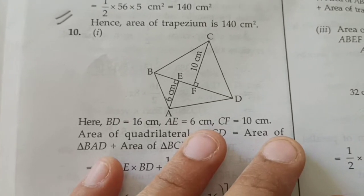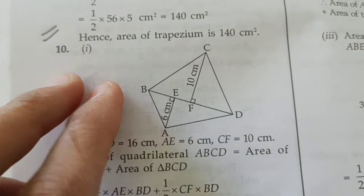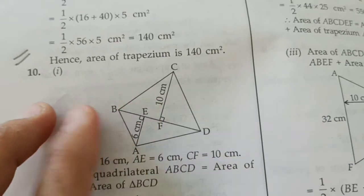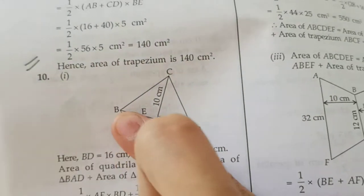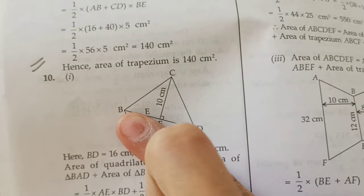Good morning students, today we are going to continue with exercise 15.2, question number 10. See, this kind of figure is given to us. How does this look like? This looks like a triangle.